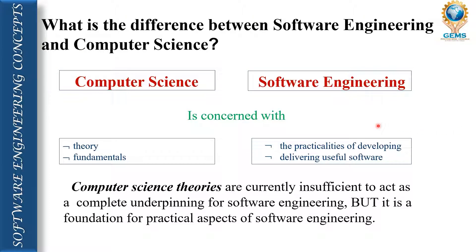What is the difference between software engineering and computer science? Computer science talks about theory and fundamentals, whereas software engineering talks about practical development, processing, and delivering useful software. However, software engineering is totally based on computer science concepts, because when we have the fundamental theory we are able to do the practical work. Computer science is the foundation for the practical aspects of software engineering.